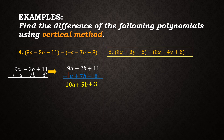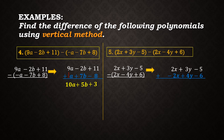Lastly, for example number 5, we have 2x plus 3y minus 5 minus the quantity 2x minus 4y plus 6. We align and rewrite to obtain 2x plus 3y minus 5 plus negative 2x plus 4y minus 6. When we add: 2x plus negative 2x is equal to 0; 3y plus 4y is equal to 7y; and negative 5 plus negative 6 is equal to negative 11. Simplifying, our final answer is 7y minus 11.